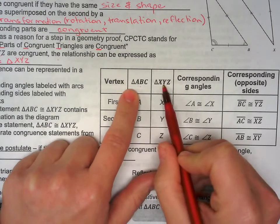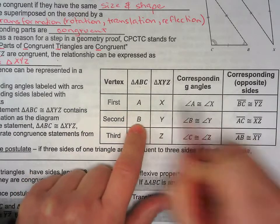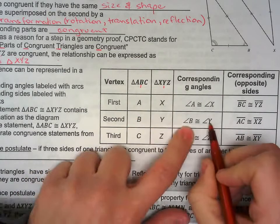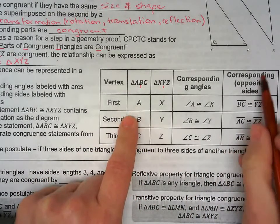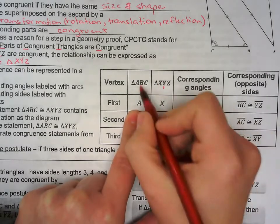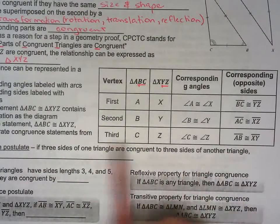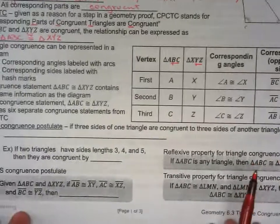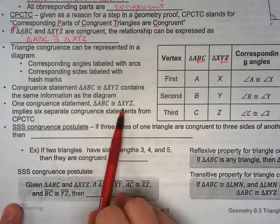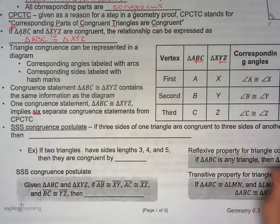If triangle ABC is congruent to triangle XYZ, that means angle A is congruent to angle X — the first one matches the first one. Angle B is congruent to angle Y, the second to the second. And that also goes for the opposite sides: if angle A is congruent to angle X, then the opposite side BC is congruent to side YZ. So one congruence statement about the triangle implies multiple relationships.